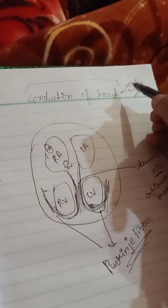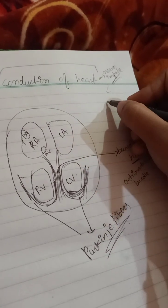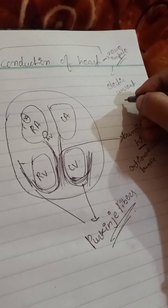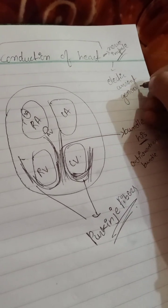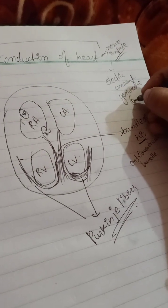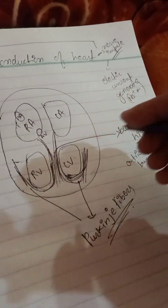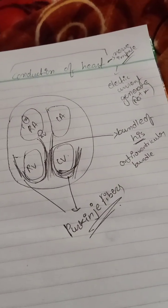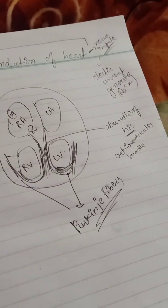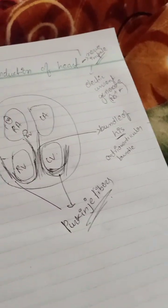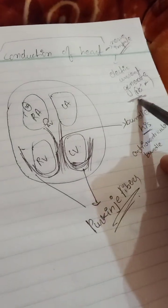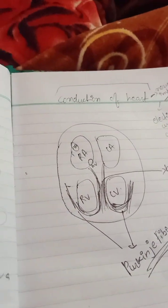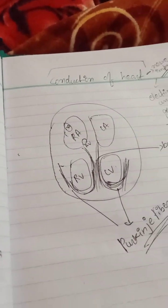Now, what is a nerve impulse? The nerve impulse is basically an electric current that is generated by ions - sodium and potassium ions - across the membrane. These ions spread through the muscles of the heart.